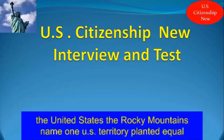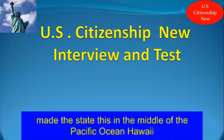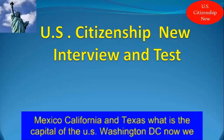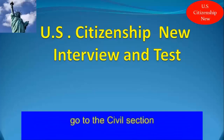Name one U.S. territory. Puerto Rico. Name the state that's in the middle of the Pacific Ocean. Hawaii. Name one state that borders Canada. New Hampshire. Name one state that borders Mexico. California and Texas. What is the capital of the U.S.? Washington, D.C.